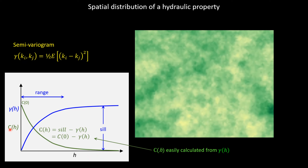IID stands for Independent Identically Distributed random variables. Normally these will be normally distributed, mean of 0, standard deviation of 1. The principle is: somehow we take a whole heap of independently variable normal deviates and turn them into a large vector k that belongs to a normal distribution with a mean k-bar, characterized by a covariance matrix displaying the spatial correlation we seek. Once we have that covariance matrix and mean value, we can generate parameter fields exhibiting this spatial correlation.